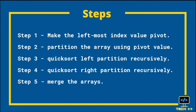Let's look at the steps involved in the Quicksort algorithm. Step 1: make the leftmost index value as a pivot. Step 2: partition the array using the pivot value. Step 3: Quicksort the left partition recursively. Step 4: Quicksort the right partition recursively. Step 5: merge the arrays.